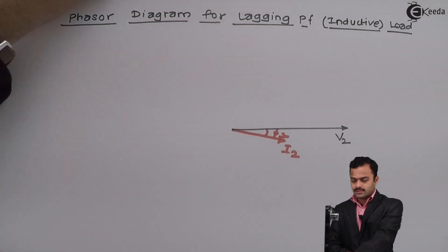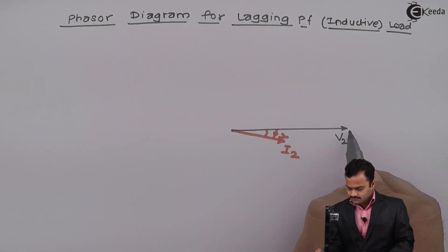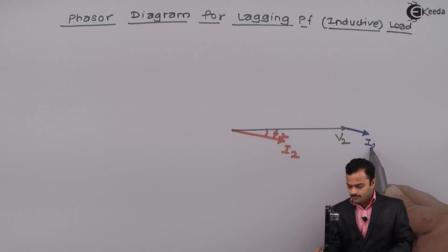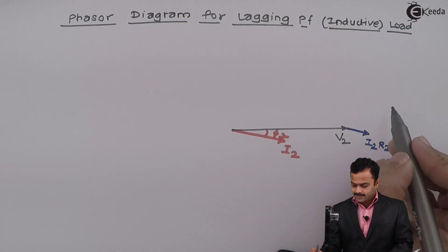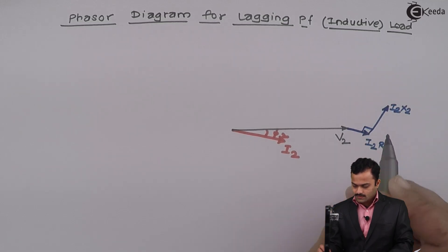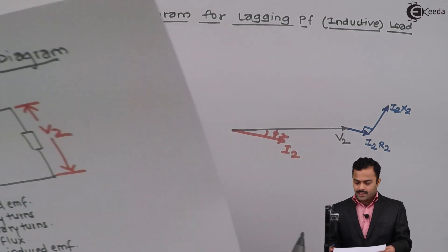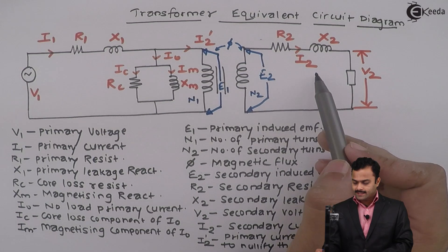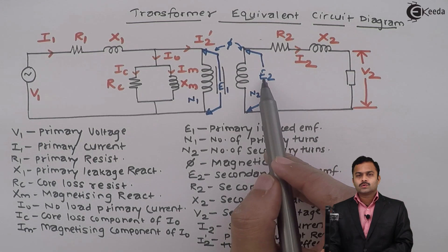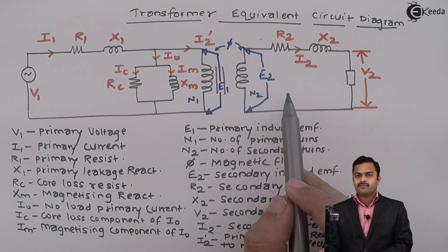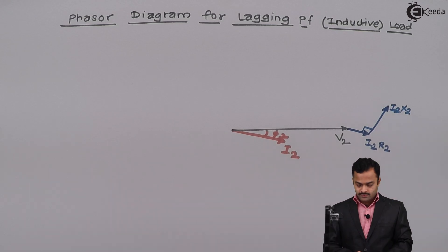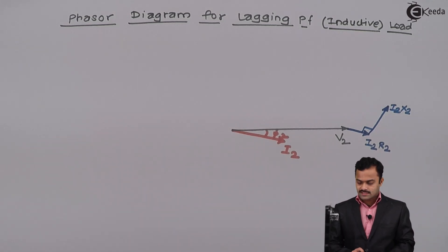I will draw these two voltage drops: I2·R2 parallel to I2, and I2·X2 leading I2 by 90 degrees. Applying KVL to the secondary side, the phasor sum of I2·R2, I2·X2, and V2 equals E2. So adding V2, I2·R2, and I2·X2 gives the phasor E2.